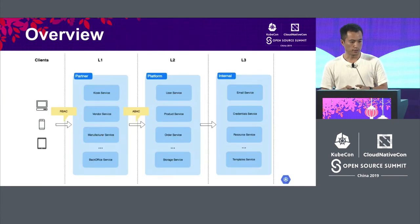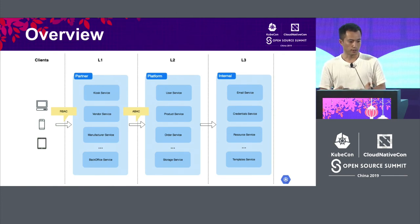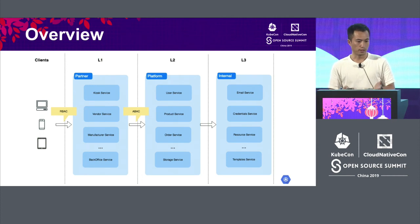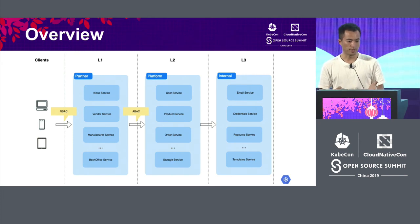Here's the overview: in L1 we enforce role-based access control with Istio mixer, and in L2 we are applying network policies to limit access to the L2 services.